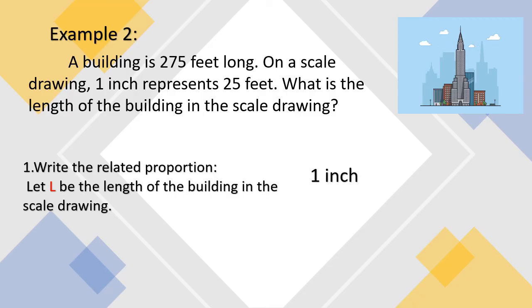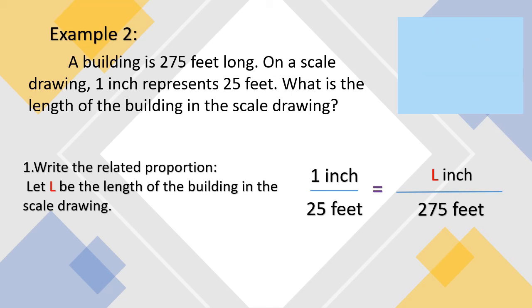1 inch to 25 feet is our scale. It is equal to L inch. We are finding the missing term here, which is L, to 275 feet. Using the same step, we will apply cross multiplication. 1 times 275 feet is 275 feet. Then we have 25 feet, so we will divide that by 25 feet.